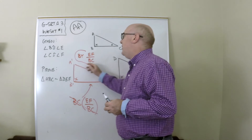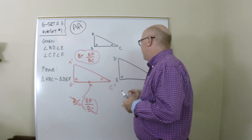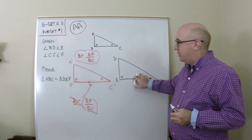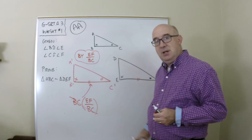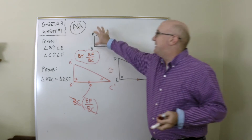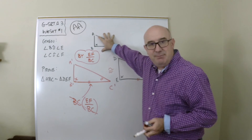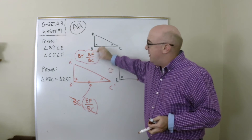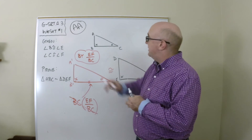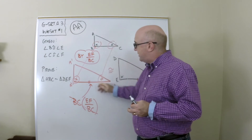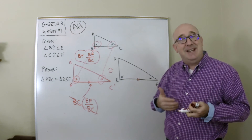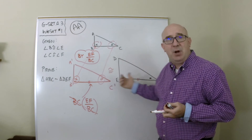By using this scale factor, I guarantee that side C'B' is exactly the same length as EF. Now this triangle has to be congruent to the other by Angle-Side-Angle. The angles are the same and one side is the same — so these triangles are congruent. Because of that congruence, I can now say the original triangle is similar to the other. Through a dilation and then a congruence postulate, I've established similarity.